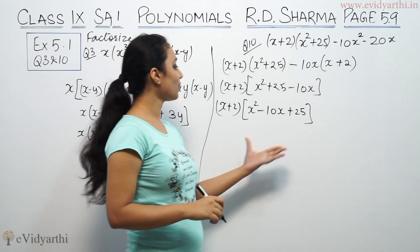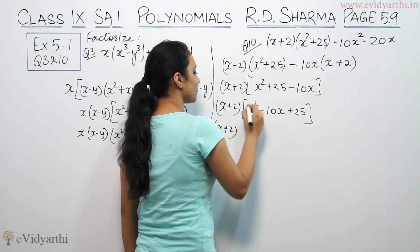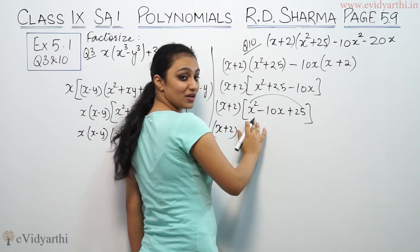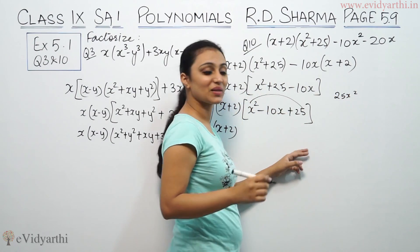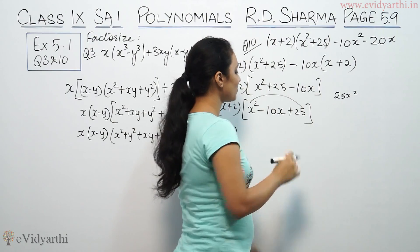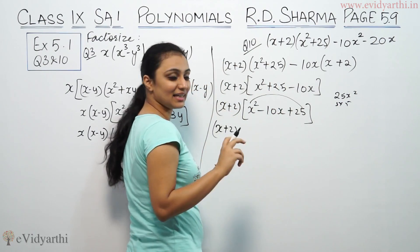This is a quadratic equation. We'll factor it using middle term splitting. For middle term splitting, multiply first term and constant term. So x² times 25 gives 25x². Now arrange so we get 10x. So 5x and 5x.